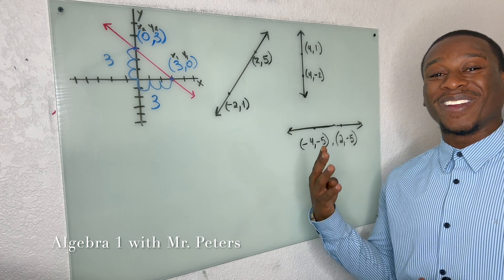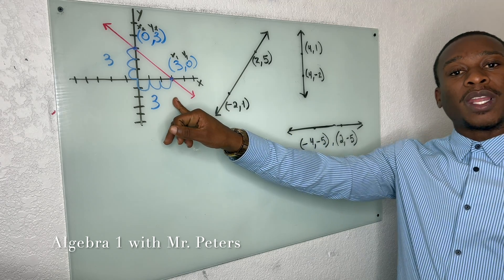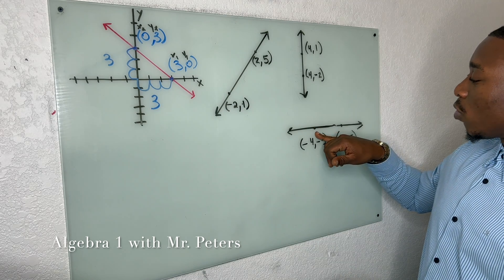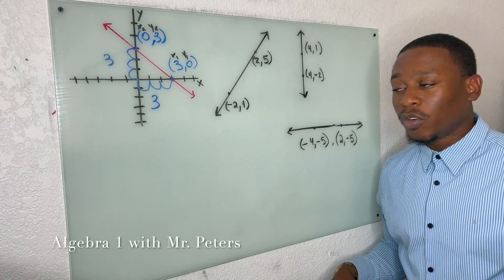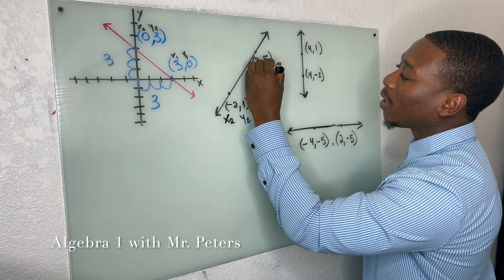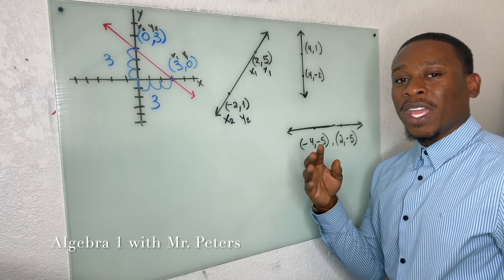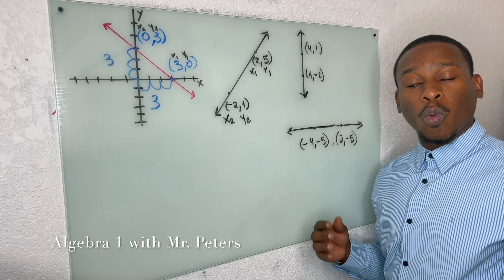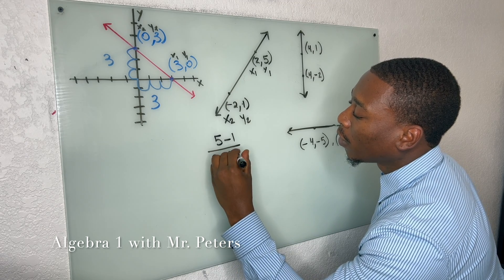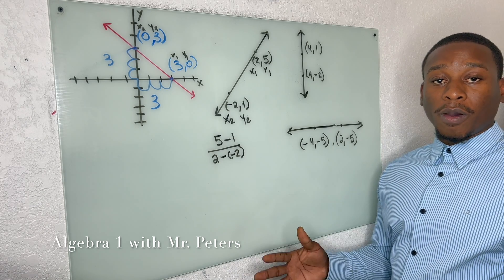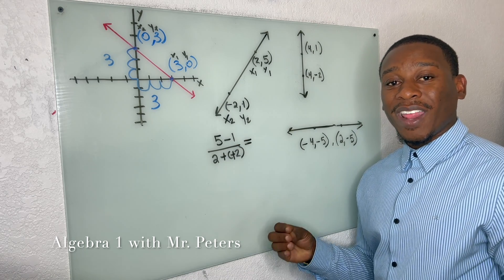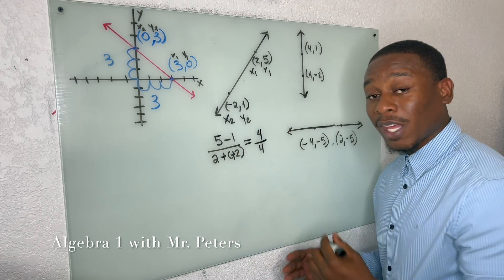We're now going to talk about the four different kinds of slope. We have a negative slope, which is a line going down like stairs. We have a positive slope, which is a line going up like stairs. A slope of zero, and a slope that's undefined, meaning we have no slope. Just remember that we read our graphs from left to right. Anytime you have a negative number working with slope, put it in parentheses to make sure we have the right sign.